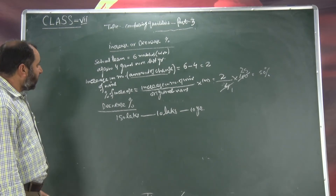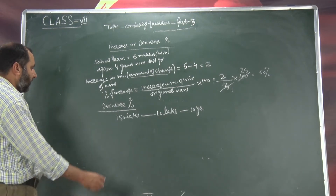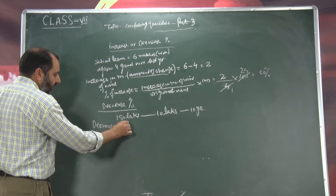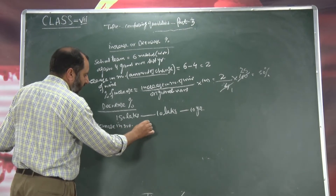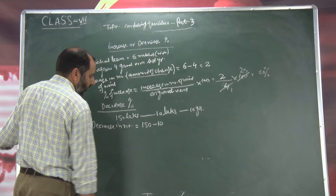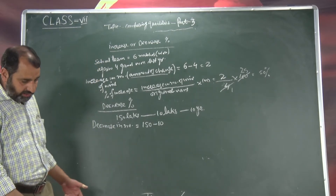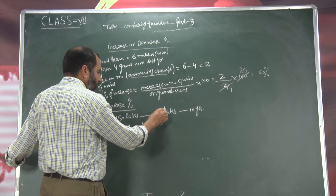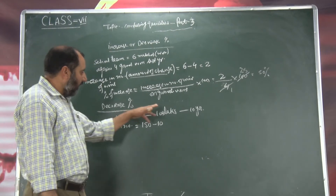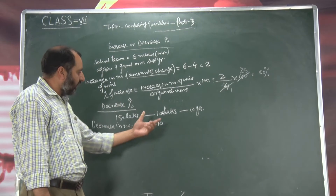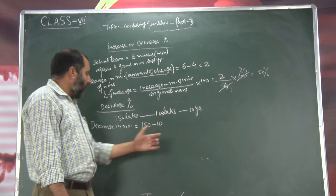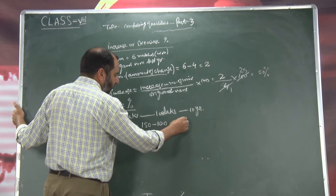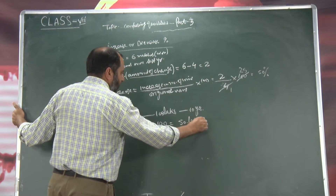Ab pehle hain dekhi ki decrease in number — decrease of illiterate, decrease in number hua hai. Which is equal to 150 minus 100 — yani 150 lakhs mein se minus ho gaya 100 lakhs. To wahaan ho gaya 50 lakhs. 50 lakhs decrease ho rai hai illiterate person.